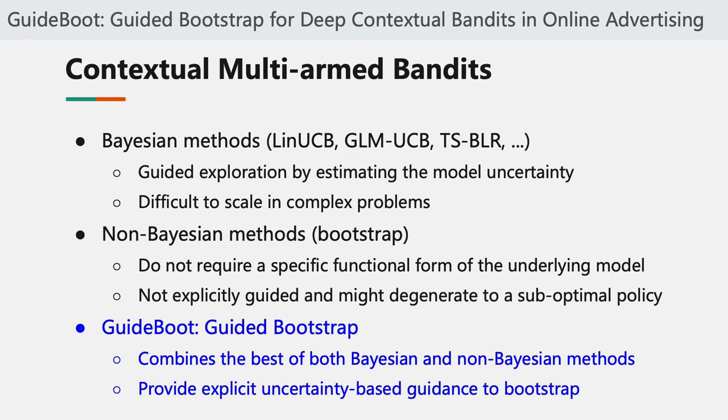Bayesian methods provide guided exploration by estimating the model uncertainty with Bayesian posterior inference and make decisions thereby. For example, we have LinUCB for linear bandits. However, these methods are difficult to scale, because when the problem has high-dimensional inputs or non-linear dependencies, exact probabilistic inference is often intractable.